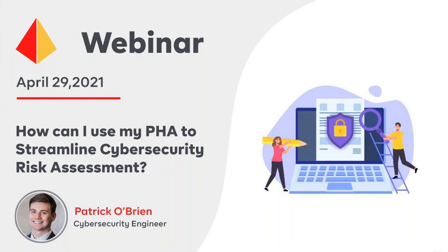Question: Is just the initial risk assessment sufficient to meet IEC 61511 cybersecurity risk assessment requirements, or does the detailed assessment need to be completed? Answer: Based on what IEC 61511 specifically requires — including specific threat vector documentation, consequence countermeasures or protections, and residual risk — for safety instrumented systems you do typically need to go to the detailed risk assessment level. Oftentimes, based on the risks associated with those systems, they do line up as high-risk in the initial risk assessment as well.